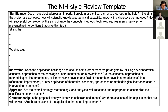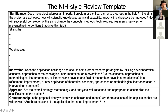For approach: are the overall strategy, methodology, and analysis well-reasoned and appropriate to accomplish the specific aims of the project? Those are of course related to the experiments. The significance, innovation, and approach categories are all NIH language. Grantsmanship, however, is something Ed and I came up with to help you write your grants — it's in our own words. We're asking: is the proposal clearly written with cohesion and impact? Are there sections that are well written? Are there sections that need improvement? This is where you can really help your colleague write an effective proposal.